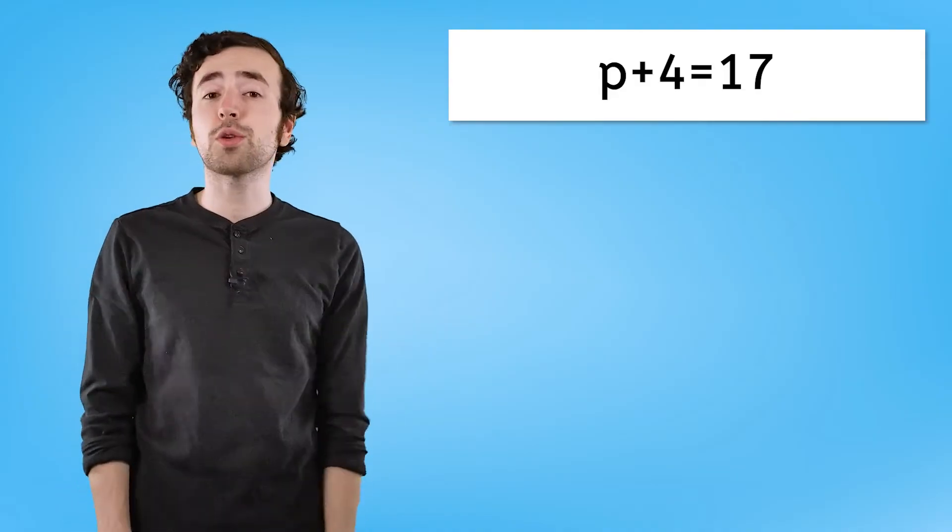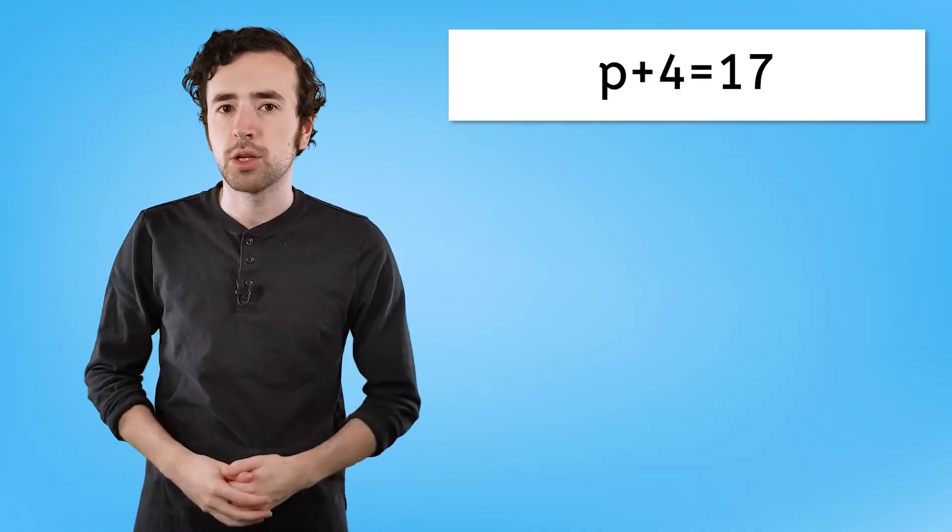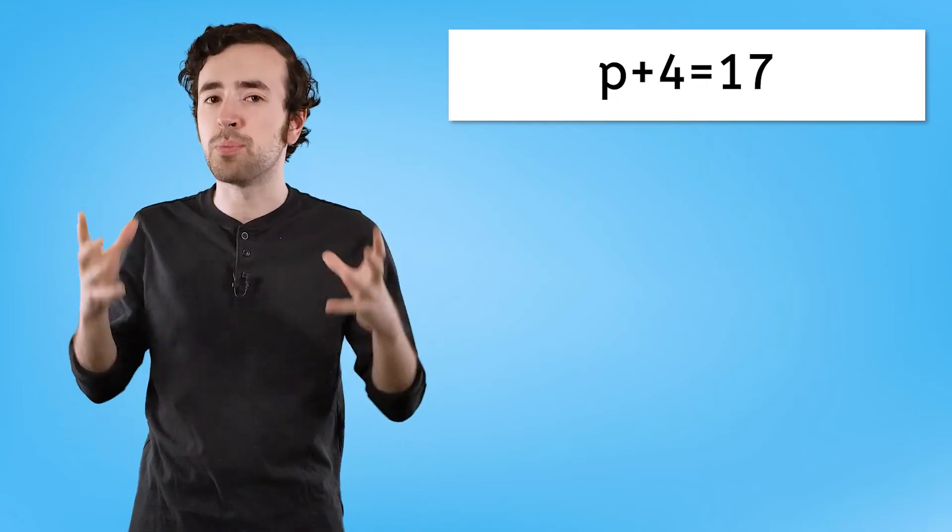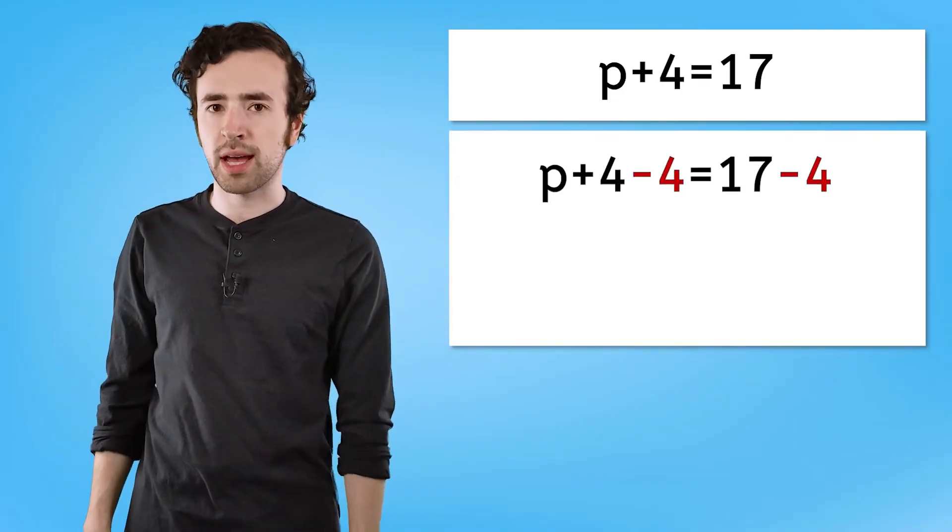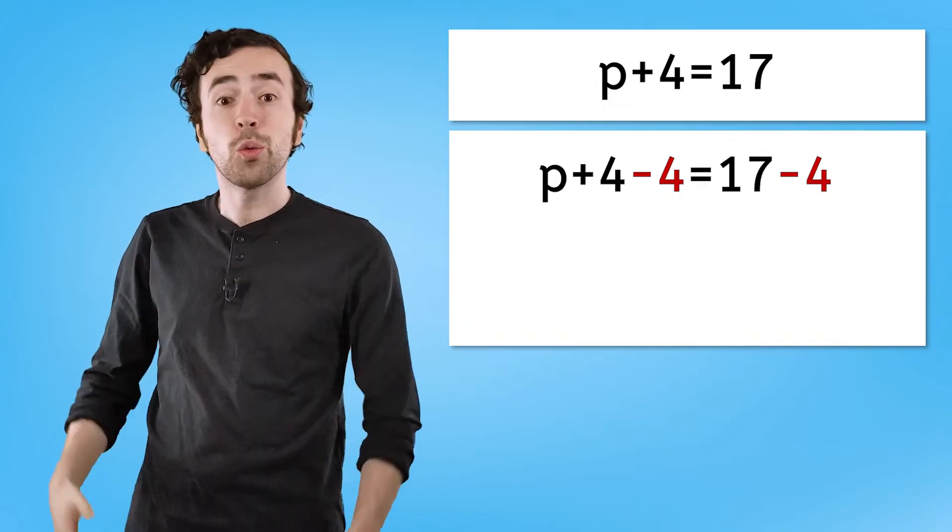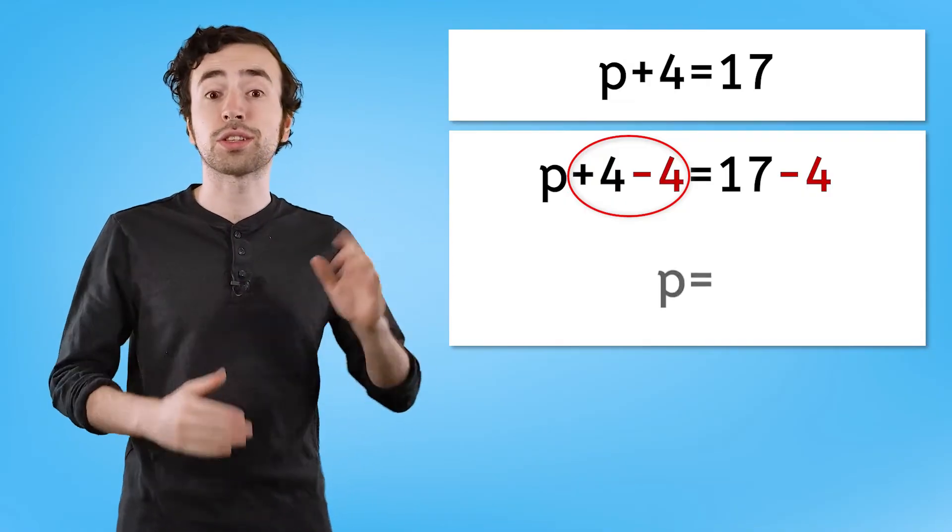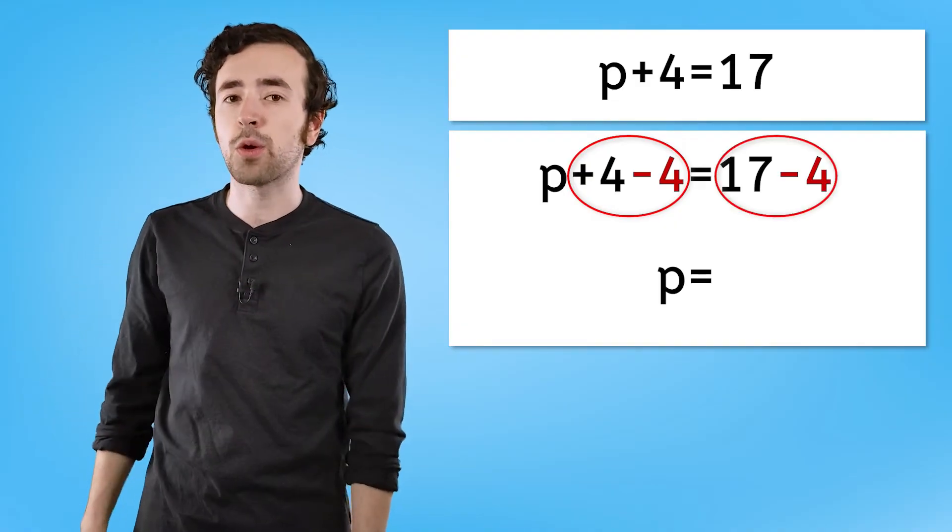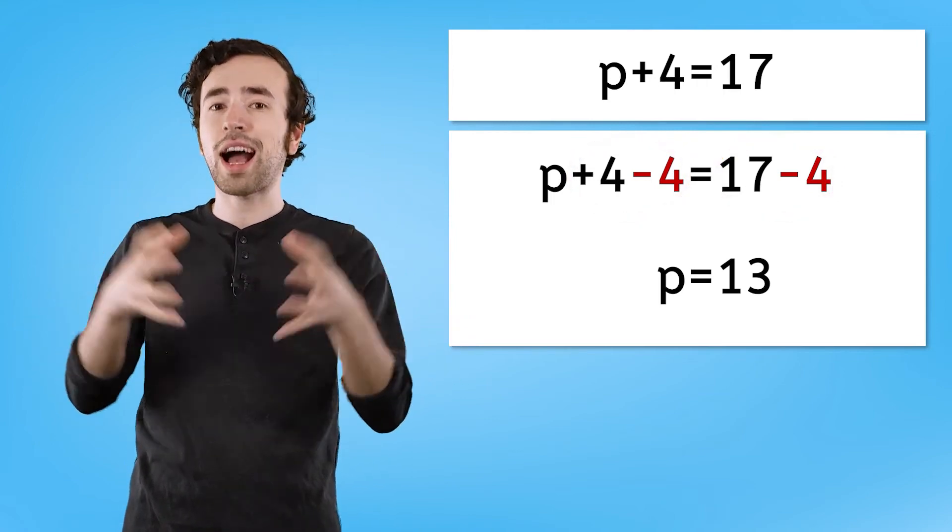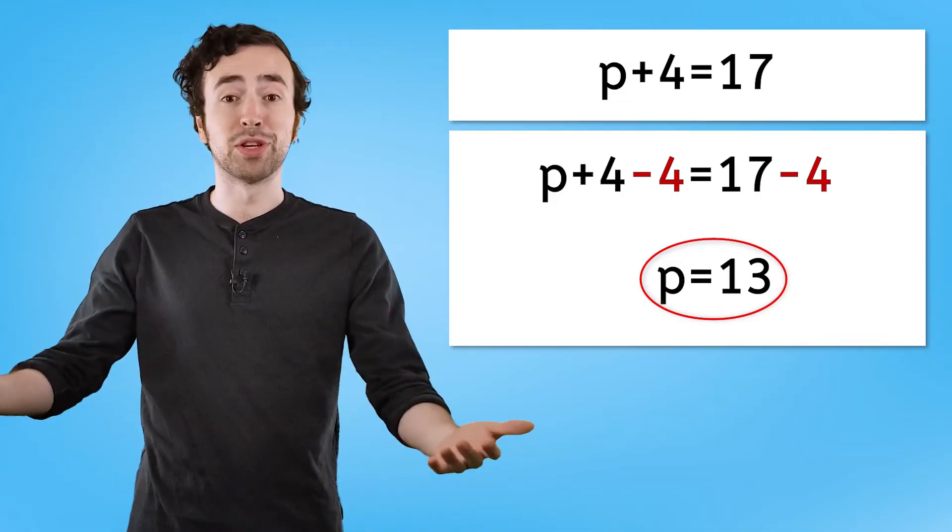So let's take another look at p plus 4 equals 17. Right now we are taking that variable p and adding 4 to it to get 17. To undo adding 4, I need to subtract 4. And to keep my equation equal and balanced, I need to do it to both sides. If I put minus 4 on both sides, I wind up with an equation that looks like this. What do you think I can do now? We can simplify. These are like terms and 4 minus 4 makes 0 so I'm left with just p over here. On the other side, 17 minus 4 makes 13. This is always our goal in equations. We want to get the variable by itself or isolate it so that we can see what number it's equal to. In this case, we have that p equals 13. This is our solution to the equation.